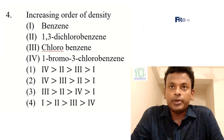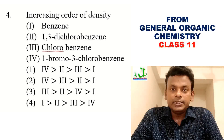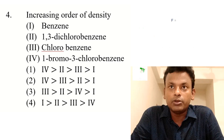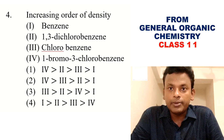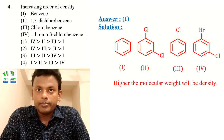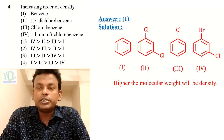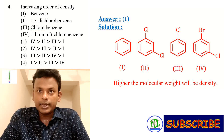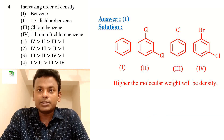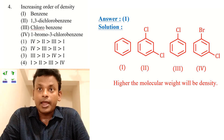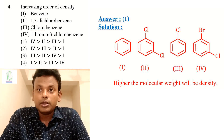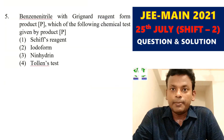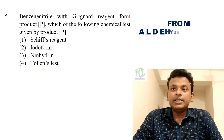Question 4: Increasing order of density among benzene, 1,3-dichlorobenzene, chlorobenzene, and 1-bromo-3-chlorobenzene. The answer is option 1: benzene < chlorobenzene < 1,3-dichlorobenzene < 1-bromo-3-chlorobenzene. Higher molecular weight means higher density. Next, question number 5.